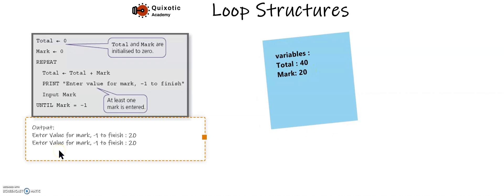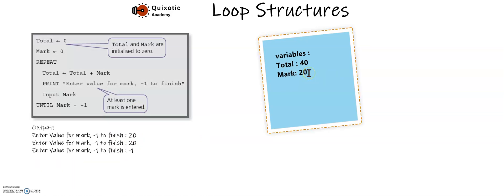The program will again ask for the mark. Now I say minus one because I want the total of just two marks. It takes minus one into the variable named mark and checks the condition: if mark equals minus one. Now the condition is true — mark is equal to minus one — so this repeat process is stopped.